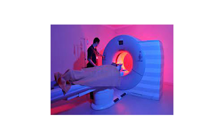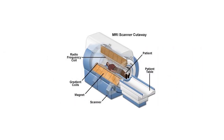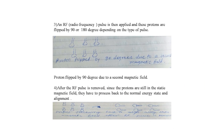Since the H proton is the most abundant proton in the body, magnetic resonance is tuned to the resonating frequency of this proton. The nuclei are aligned by placing the patient in a large powerful static magnetic field. Here is a picture showing the MRI technique and machine, including the z-axis orientation. The MRI scanner has a patient table, radio frequency coil, gradient coils, and magnet.